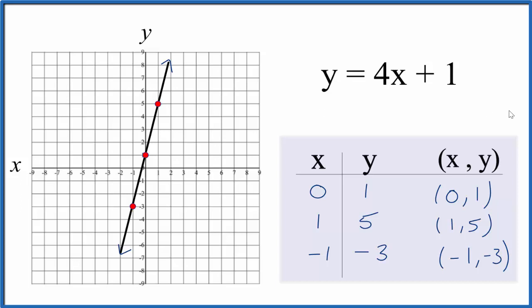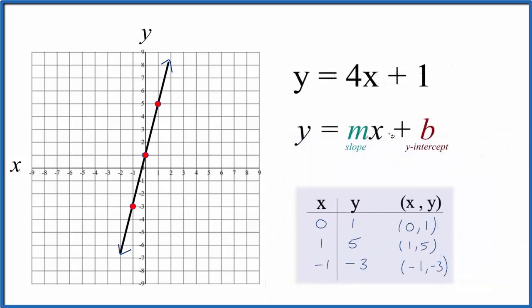Let's check our work with the slope-intercept formula. We have y equals mx plus b. The slope m is 4, and the y-intercept b is 1. The y-intercept is where we cross the y-axis, so we have 1 for the y-intercept.